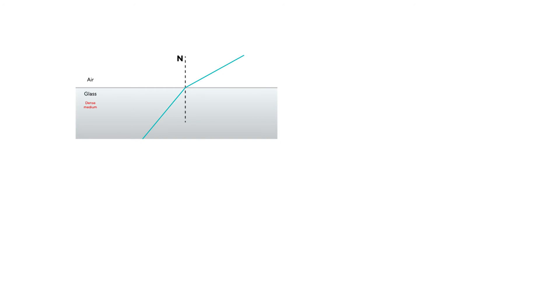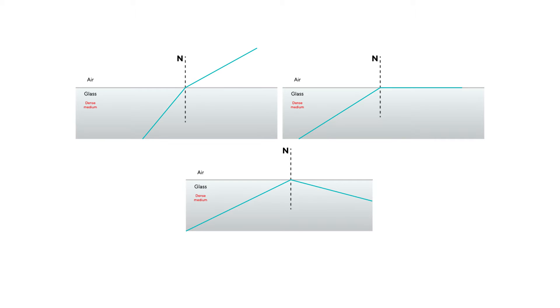SPR occurs when light moves from an optically dense medium to a less dense medium, such as from glass to air. It moves away from normal and at an angle greater than the critical angle, it undergoes total internal reflection.